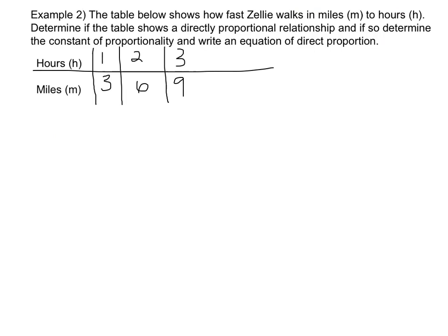So first we need to figure out if Zellie's walk is a directly proportional relationship. So let's see. We are going to start by making our ratios in miles. Miles is dependent. How many miles she goes is dependent on how many hours she's walking. So miles in this case would be the dependent variable.